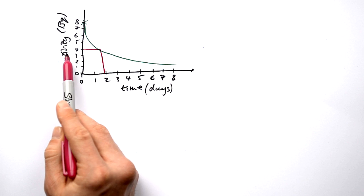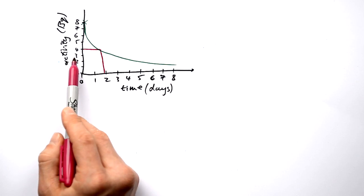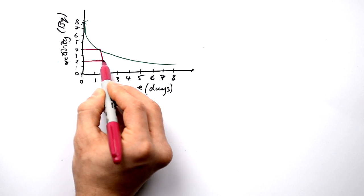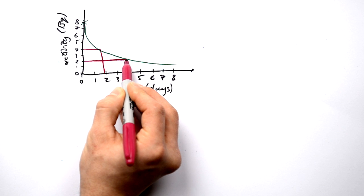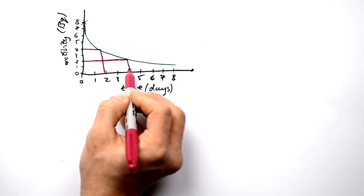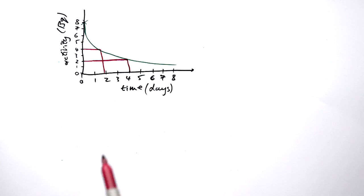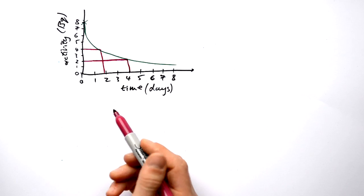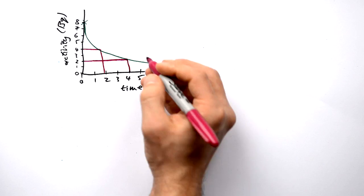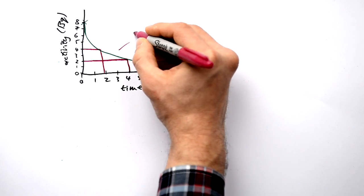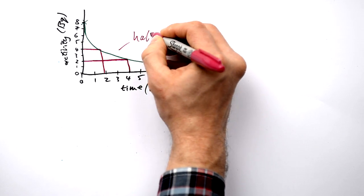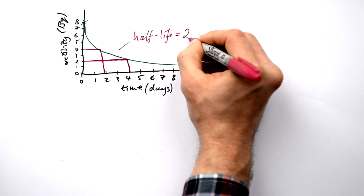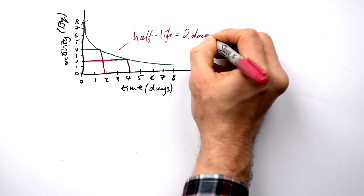Going through another half-life, the new activity should be two. Going across from two — lo and behold, it's taken another two days. So in this case, the half-life is two days.